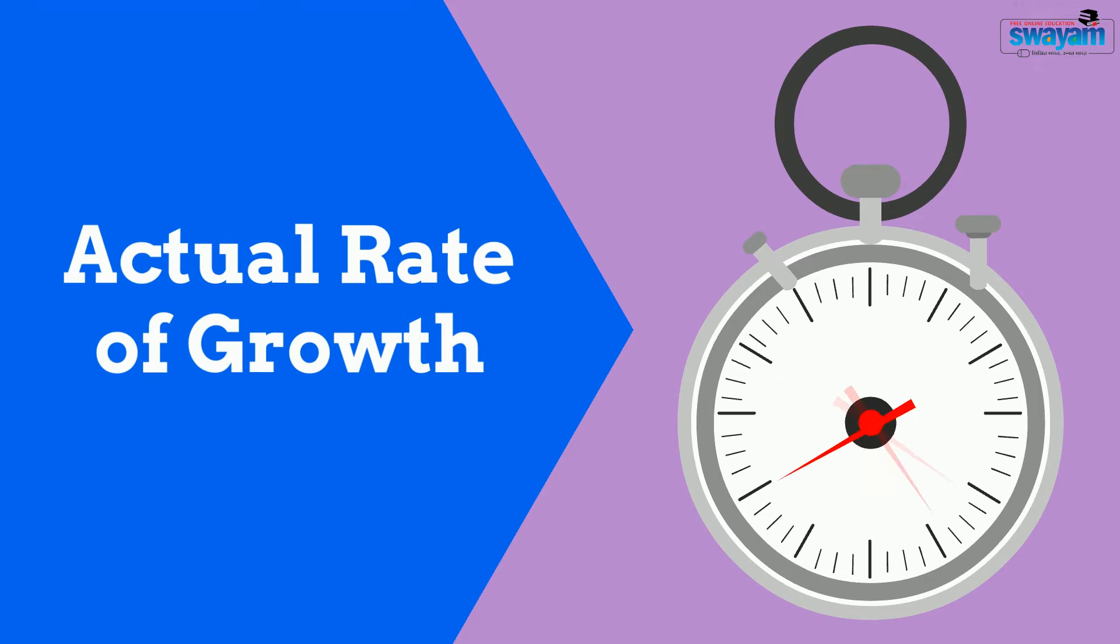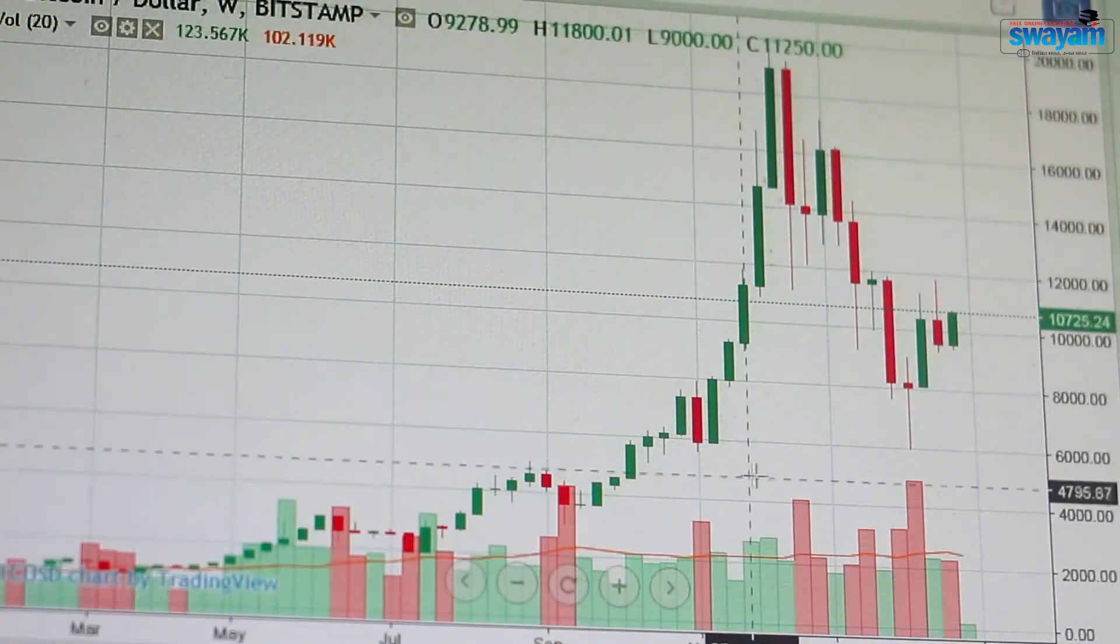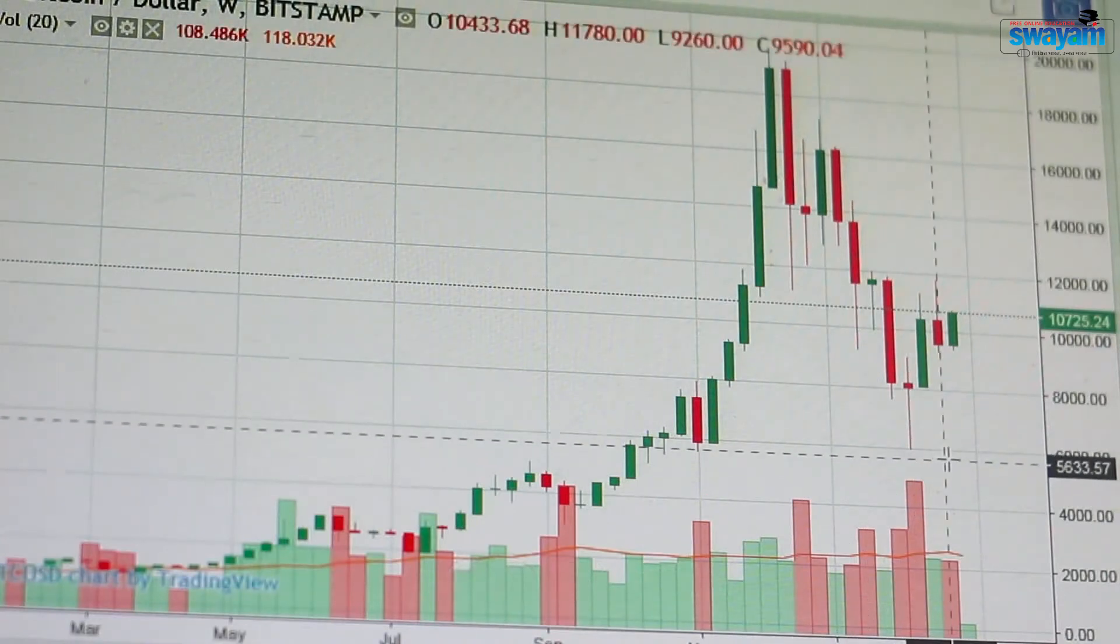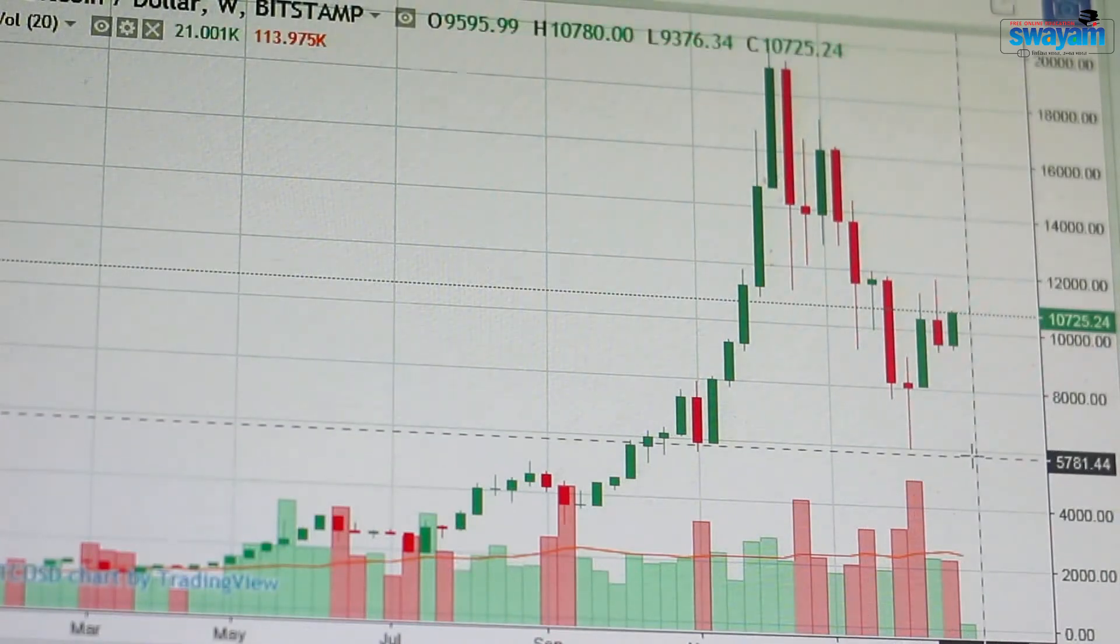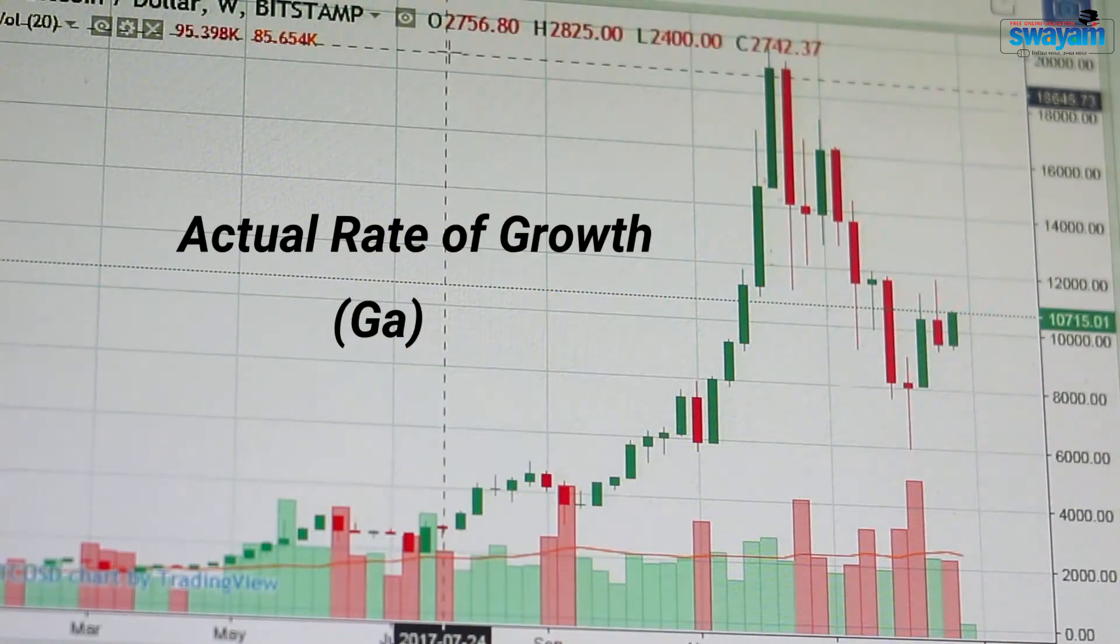The actual rate of growth. The increment of total production in any unit period can be expressed as a fraction of total production. This was termed as actual rate of growth. Let us name it GA.